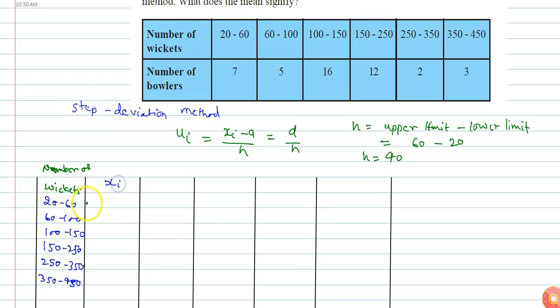xi is given as upper limit plus lower limit divided by 2, which is the average. So 60 plus 20 divided by 2 equals 40. Here 100 plus 60 equals 160 divided by 2.